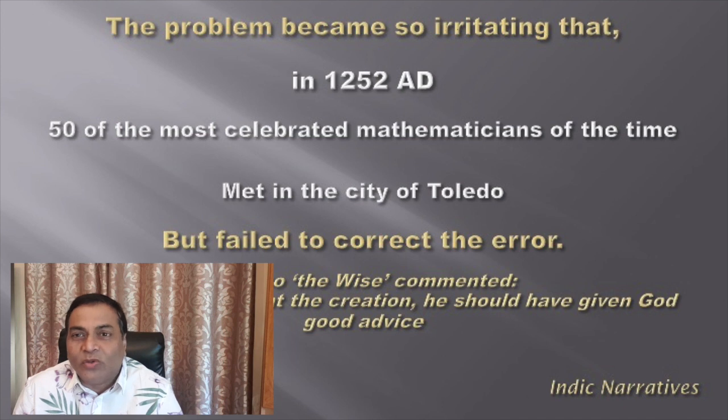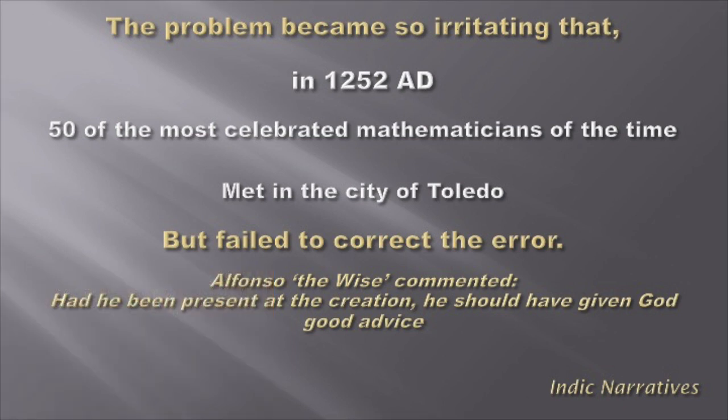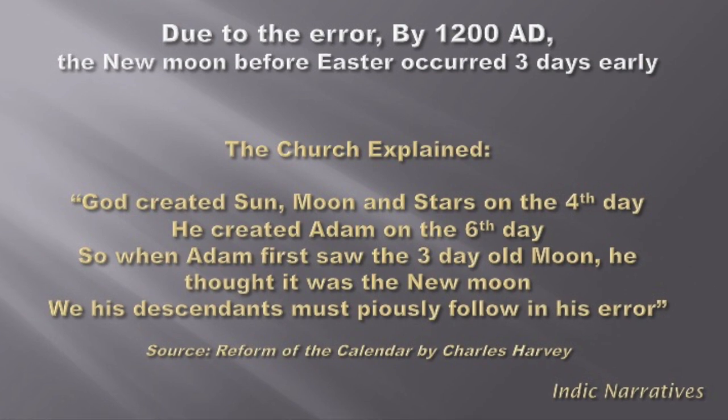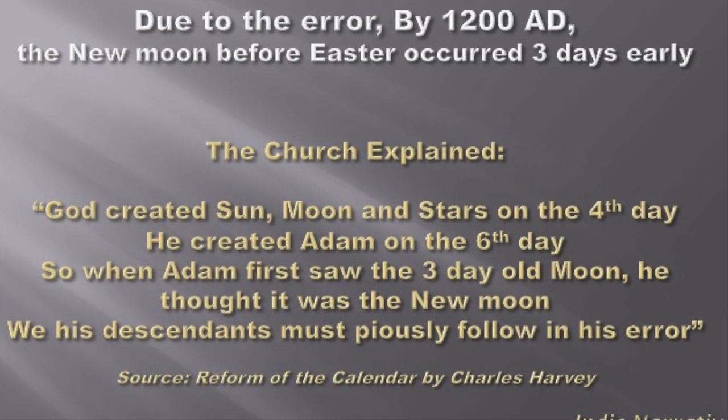By that time, the Roman civilization was nearly at an end and the Church had taken over. Pope Hilarius was appointed to carry out calendar reforms — though nothing to do with his name — but Pope Hilarius failed miserably. He could not correct it because by then they were already six days off. The problem carried on all the way until 1582.